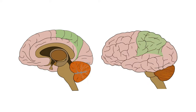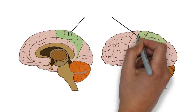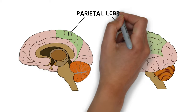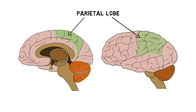Because the parietal lobe is an important area for processing sensory information, damage here may result in a deficit of sensory input from the alien limb, which may contribute to problems coordinating movement in the alien limb, and also lead to the patient perceiving the limb as foreign.